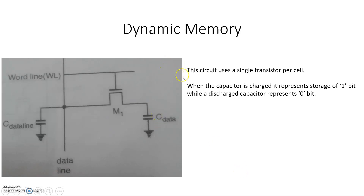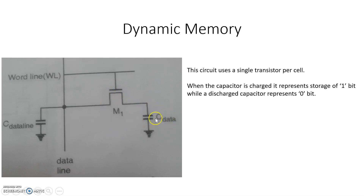Today we will discuss dynamic memory. This is the single transistor dynamic memory — it uses a single transistor per cell. When the capacitor C_data is charged, it is treated as a logic one. When this capacitor C_data is discharged, it is treated as a zero bit.